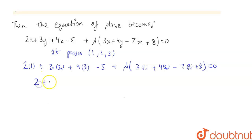This becomes 2 plus 6 plus 12 minus 5 plus lambda into 3 plus 8 minus 21 plus 8 is equals to 0. So this becomes 15 minus 2 lambda is equals to 0. So lambda comes out to be 15 by 2.